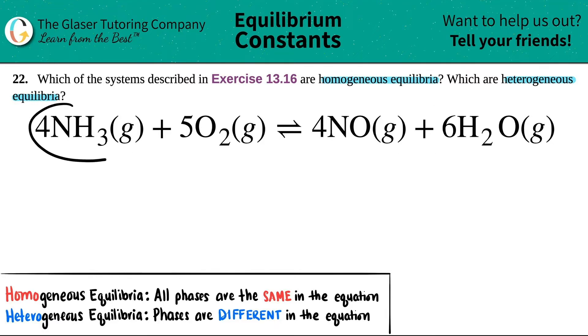So in this case we have to find out if 4NH3 gas plus 5O2 gas, which comes to equilibrium with 4NO gas plus 6H2O gas, whether this is a homogeneous or heterogeneous equilibria.